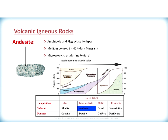If we look at the intermediate composition on the chart, the intermediate composition is found between the two lines drawn here. Andesite can have a little quartz, a little potassium feldspar, a high percentage of plagioclase feldspar, a small percentage of micas (biotite and muscovite), a high percentage of hornblende, and on the right side of this field, also pyroxene.